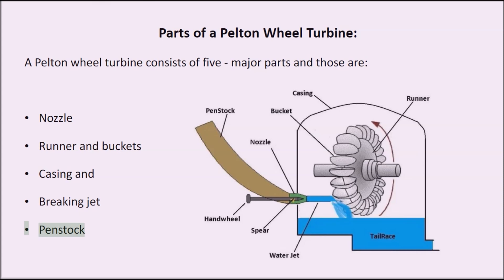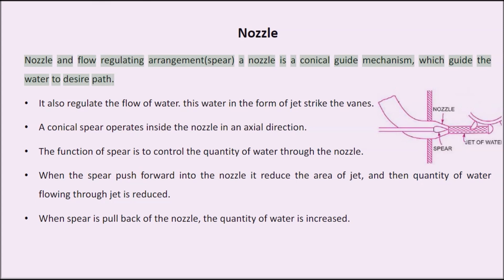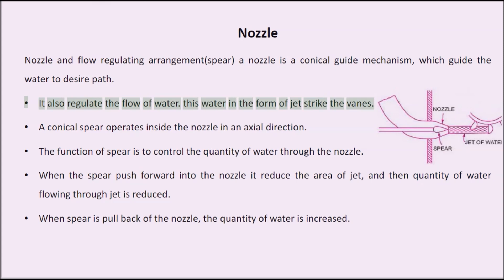Nozzle and flow regulating arrangement: A nozzle is a conical guide mechanism which guides the water to the desired path. It also regulates the flow of water. This water, in the form of a jet, strikes the vanes.